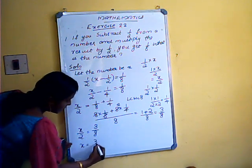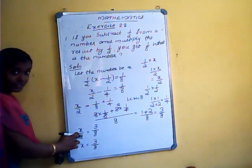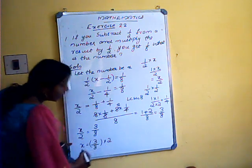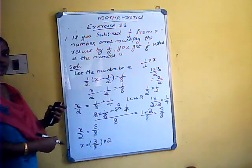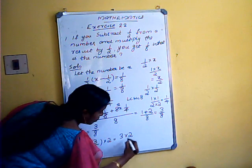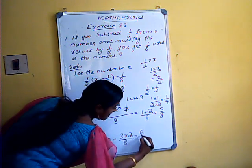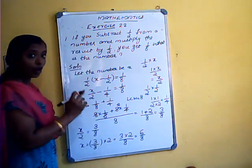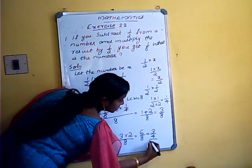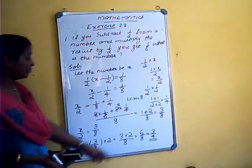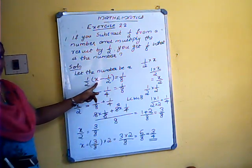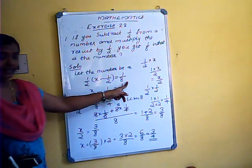So x/2 equals 3/8, which means x equals 3/8 multiplied by 2. To multiply a rational by a whole number, we multiply numerators only: 3×2 over 8 gives 6/8. Simplifying by dividing by 2, x equals 3/4. You can verify by substituting x = 3/4 to confirm you get 1/8.